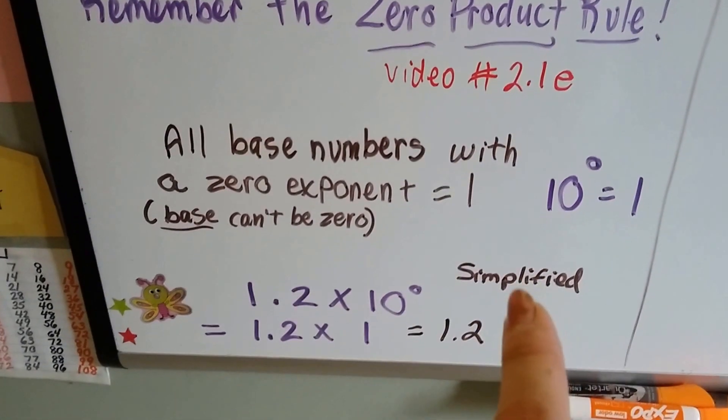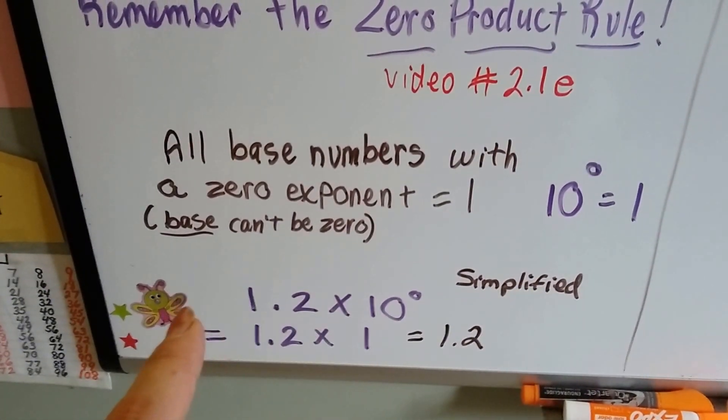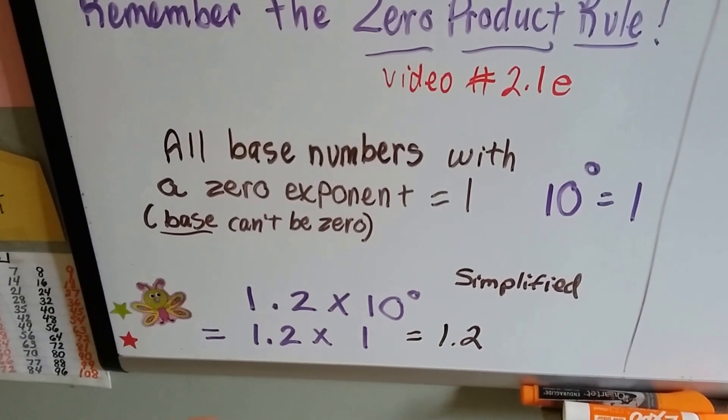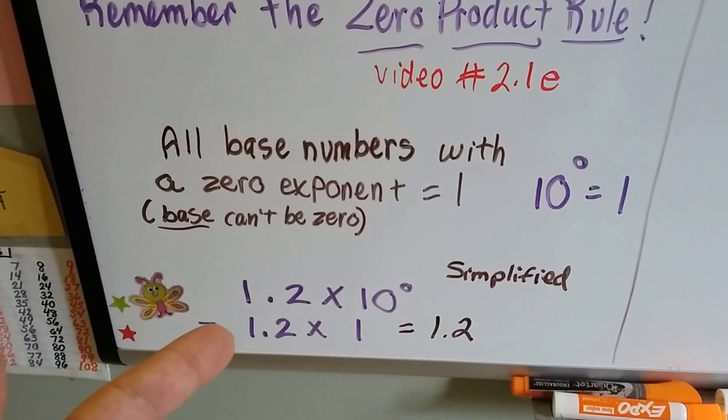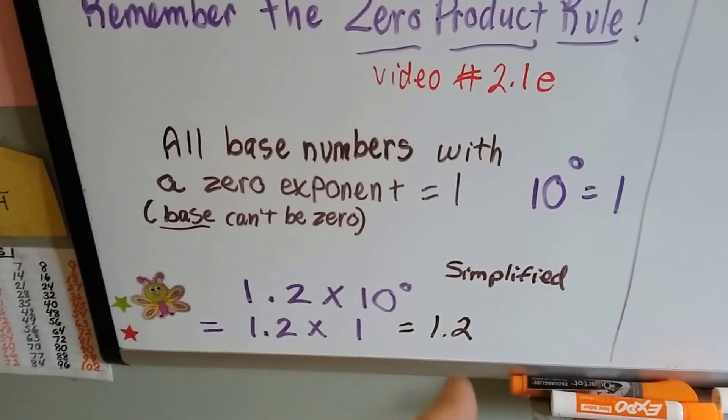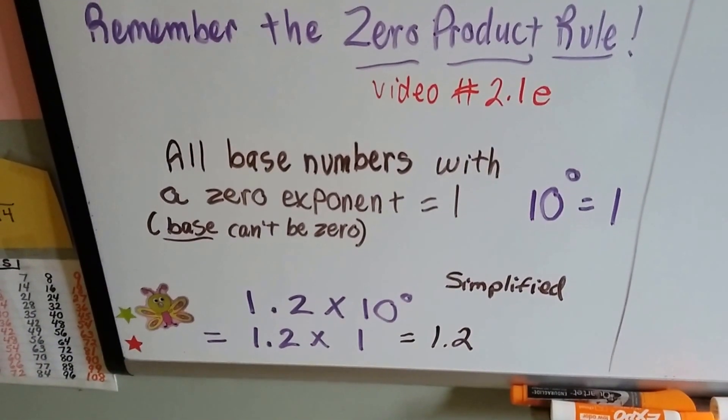So, if you simplified your problem from multiplication or division, and you ended up with 1.2 times 10 to the zero power, that really means you've got 1.2 times 1, and it simplifies to just 1.2.